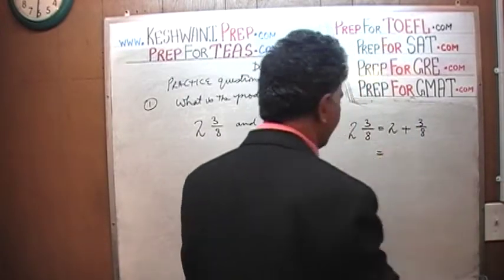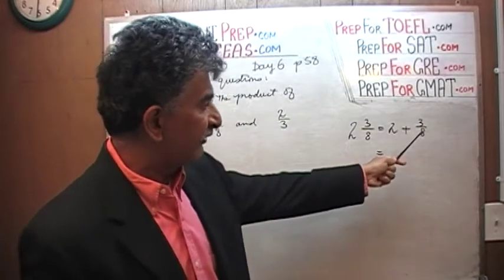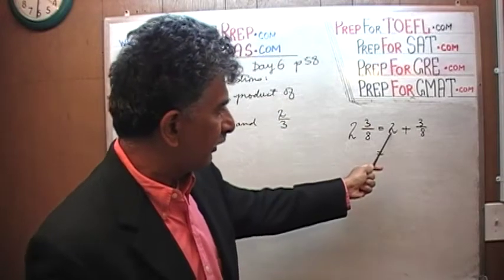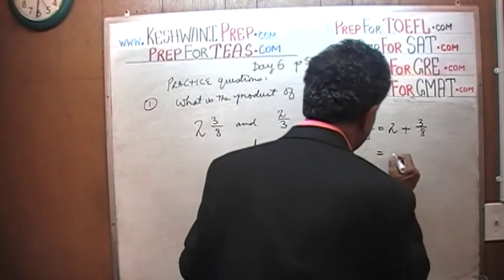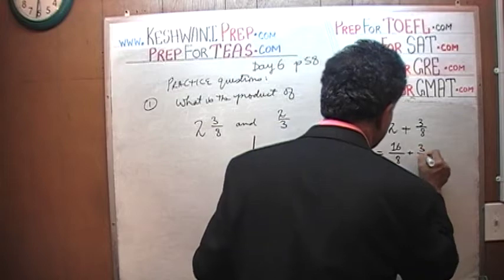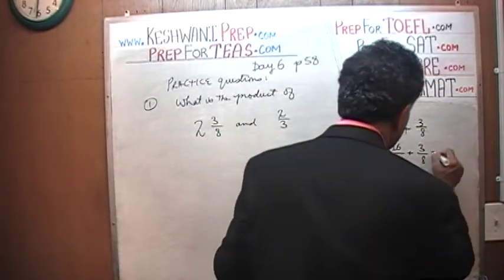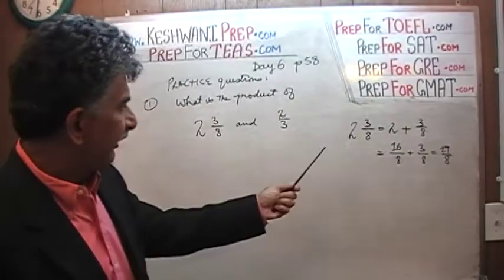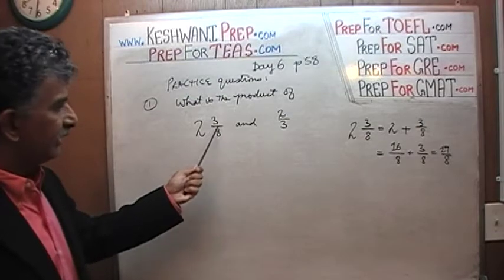How can we express two so it has the same denominator as three-eighths? We need to express two as some number divided by eight. That number is sixteen — sixteen divided by eight is two. So we have sixteen over eight plus three-eighths, which gives us nineteen-eighths. This makes perfect sense because two times eight is sixteen, plus three is nineteen.